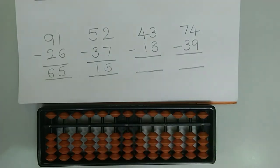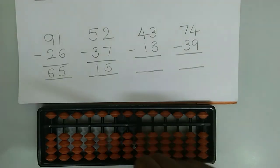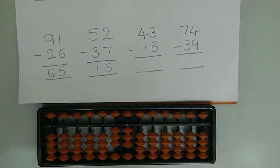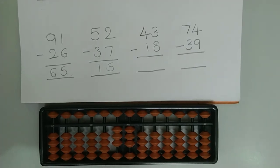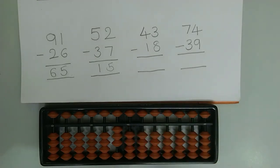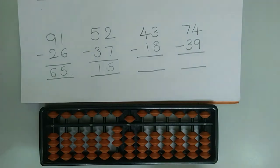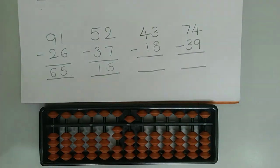Now let's try the third example which is 43 minus 18. First we need to represent 43 on the abacus. Now we need to subtract 1 from the tens rod, then subtract 8 from the ones rod. Here we use the big friend concept. The friend of 8 is 2, so we add 2 because the formula for subtraction is plus friend and minus boss. To add 2 to 3 we use the small friend concept. The friend of 2 is 3, so we need to subtract 3 and add the boss which is 5. Since this is subtraction, at the end we need to subtract the big friend boss which is 10. The final answer is 25.